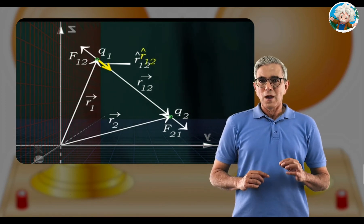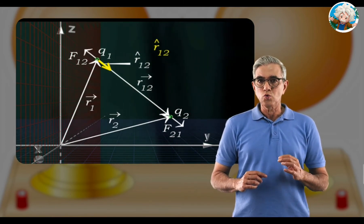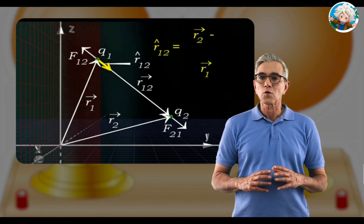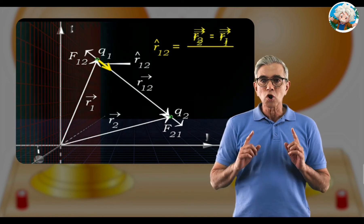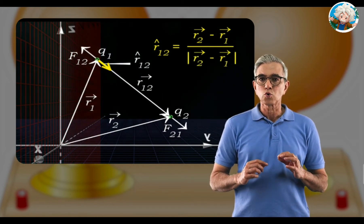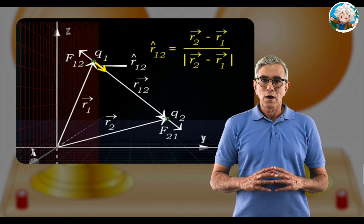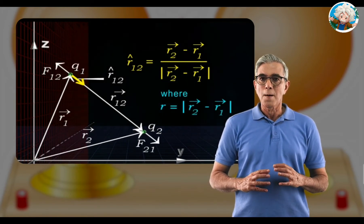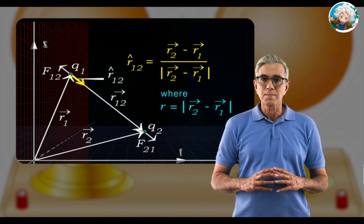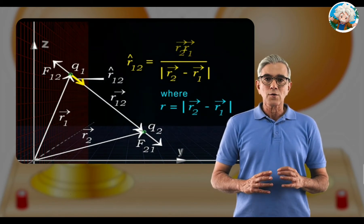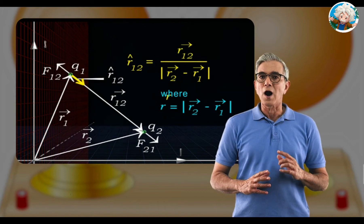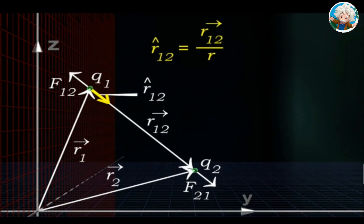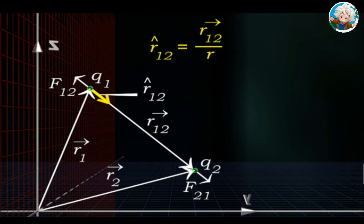Therefore, r̂₁₂ is equal to (vector r₂ minus vector r₁) divided by the modulus of (vector r₂ minus vector r₁), that is, vector r₁₂ upon r. Now we can write these forces in vector form.